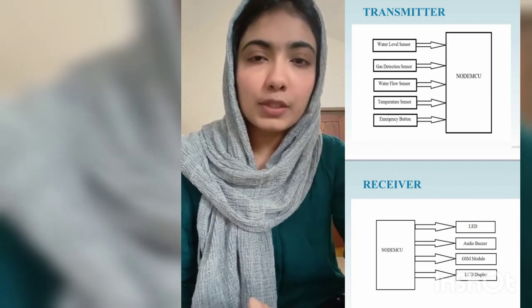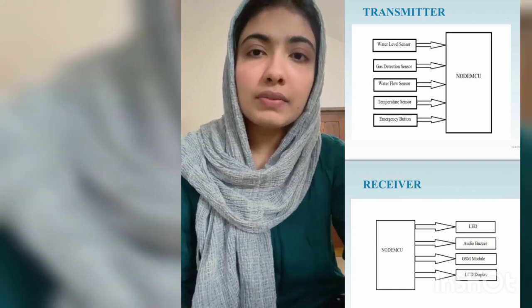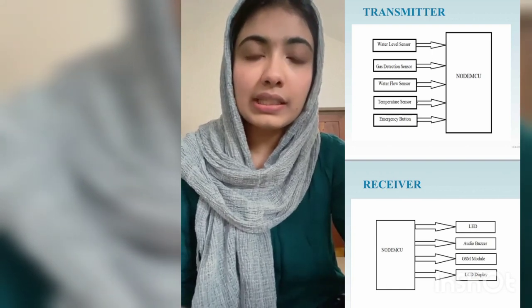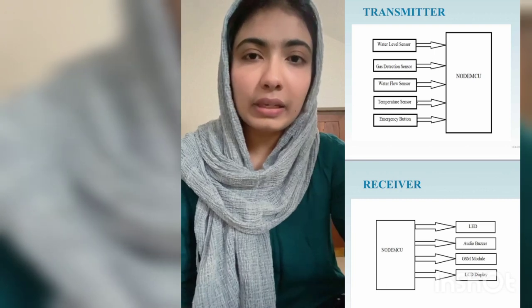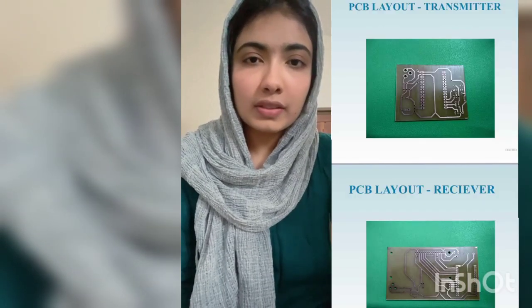On the transmitter side we have the four different sensors and the emergency button, and on the receiver side we have the audio buzzer, the GSM module, and the LCD display. In this project we are using two transmitters in order to make a mesh system. We used a software called Eagle, which is a scriptable electronic design automation application used to create PCB layouts.